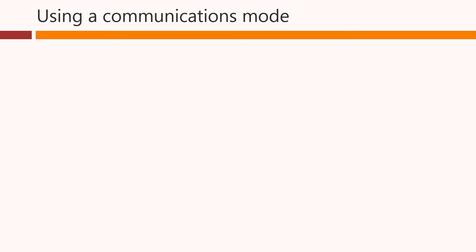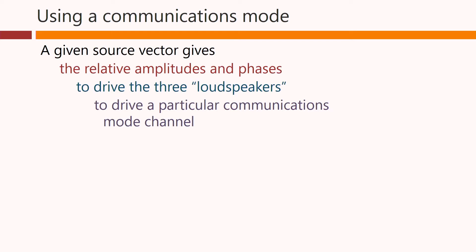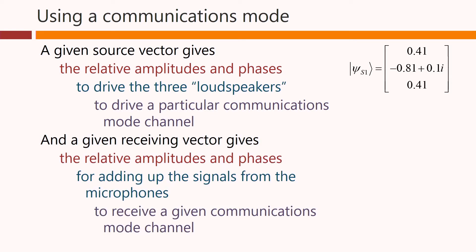How would we use a communications mode? Well, the idea is that a given source vector gives the relative amplitudes and phases to drive the three loudspeakers to drive a particular communications mode channel. So this vector of relative complex amplitudes here. And a given receiving vector gives the relative amplitudes and phases for adding up the signals from the microphones to receive a given communications mode channel. So we add up the microphone outputs with these complex amplitudes. This would give us the first channel in both cases here.